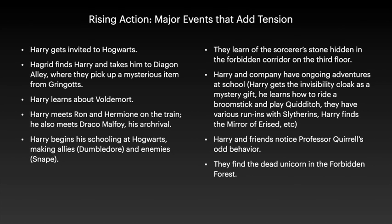Harry and his friends learn of the Sorcerer's Stone hidden in a forbidden quarter on the third floor. As they're trying to find out more about that, they have ongoing adventures. Harry gets an invisibility cloak as a mystery gift for Christmas, he learns how to ride a broomstick and play Quidditch, they have a bunch of run-ins with the Slytherins, and Harry finds the Mirror of Erised. Also, Harry and his friends notice that Professor Quirrell, who teaches Defense Against the Dark Arts, engages in some rather odd behavior and they're not really sure what his deal is. Until one night they go into the Forbidden Forest and find a dead unicorn, which is shocking and terrifying because it's one of the worst things that you can do. And all of this leads to the climactic moment.